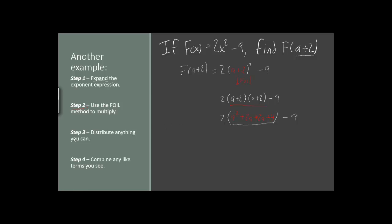Now that we've completed our FOILing, let's move to step 3 and just distribute whatever we can. We're going to have 2 times all 4 of the terms that are in this parentheses.